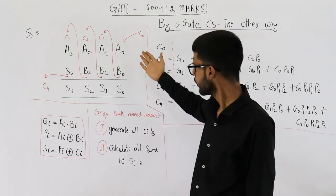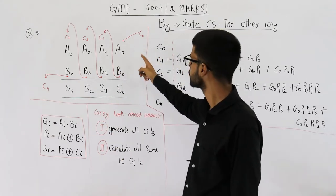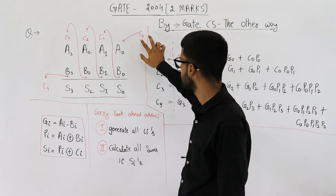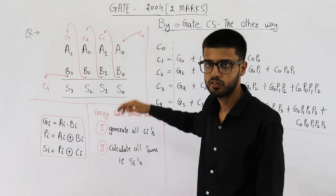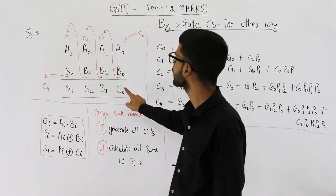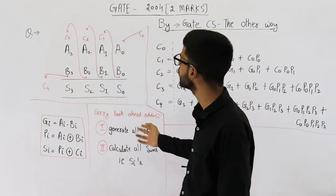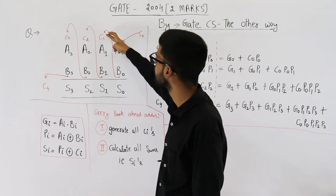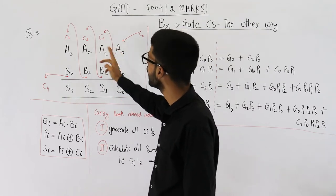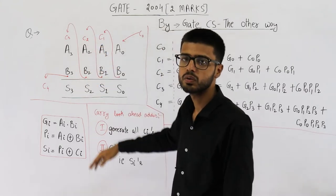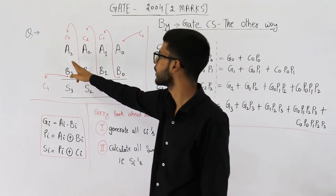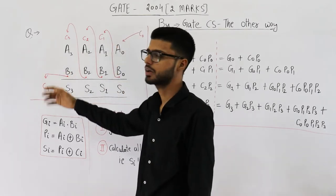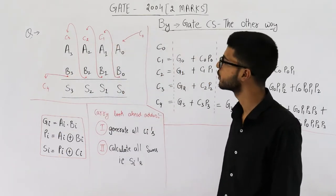What happens in a normal adder? We add these numbers stage by stage. First of all, we calculate the sum of three bits: C0, A0, and B0. This is the carry-in and the zeroth bits of both numbers. You get sum S0 and a carry for the next stage. Then we calculate the sum for stage 1, getting S1 and carry for the next stage, and so on till the last stage. The total time depends on the number of stages. If you have 100-bit numbers, there will be 100 stages and there is going to be a lot of delay.